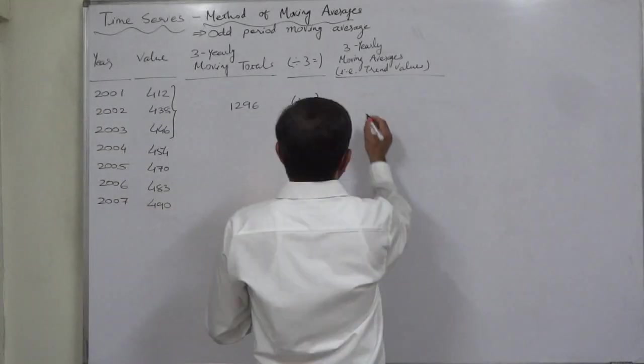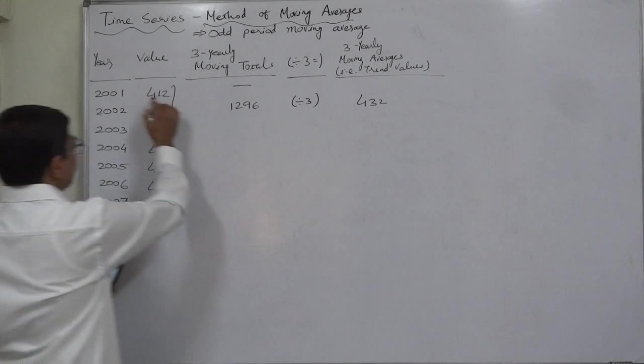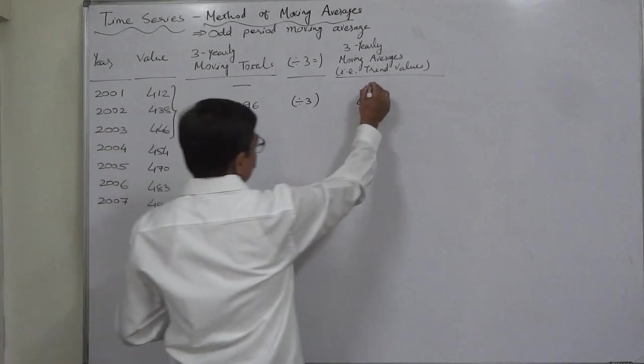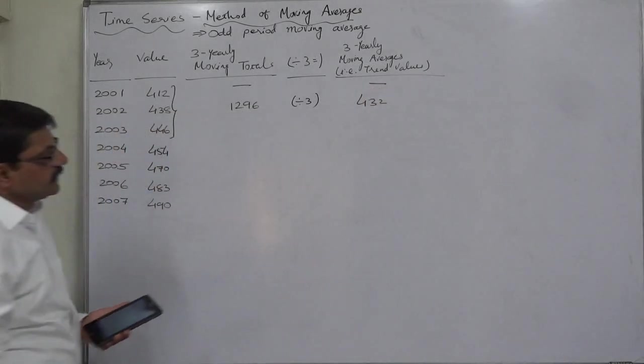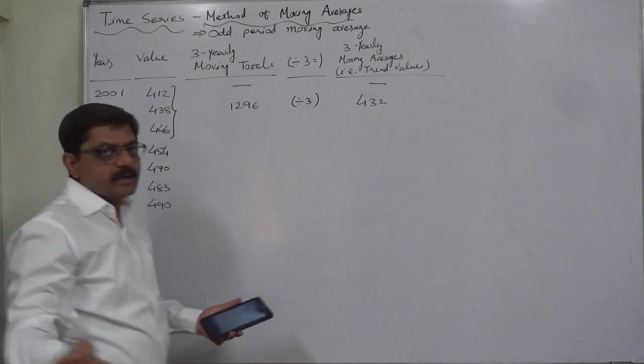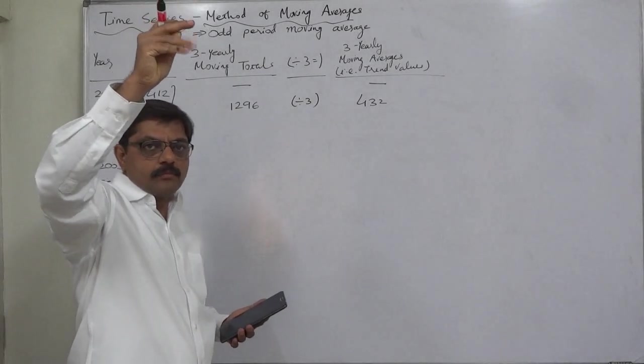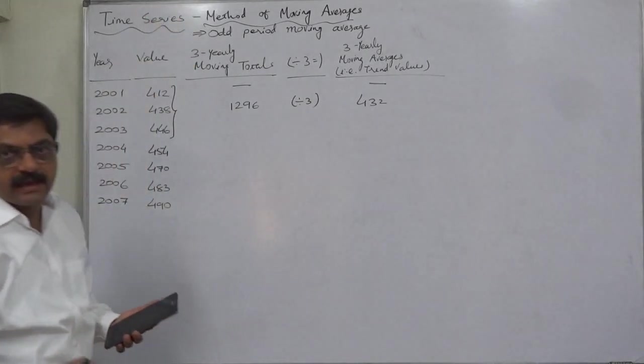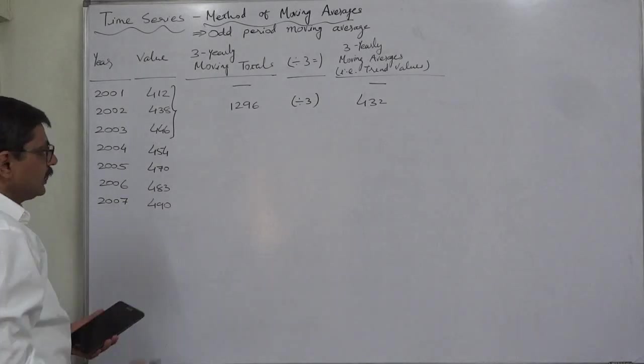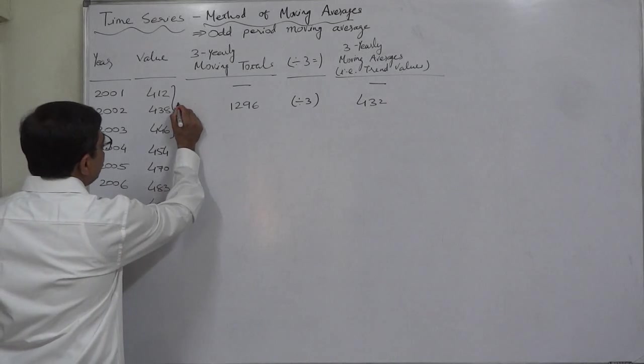That will be 432. See, nothing has been written against first year, so nothing will be written against first year in case of averages also. You can take this as limitation of moving averages. In some period, in the beginning and at the end, there will be no trend value.